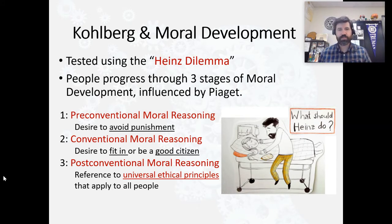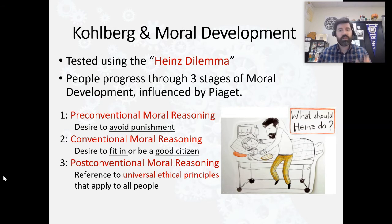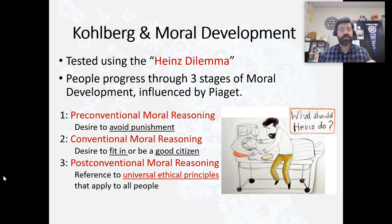Kohlberg wanted to test this out, and he did so by writing what's famously known as the Heinz Dilemma. The gist is: there's a man whose wife is really sick, and a doctor has developed a drug that can cure her. But the doctor is charging a lot of money for the drug, and Heinz doesn't have the money. He's tried every legal possible thing to raise the money and he's still short. So Heinz is considering breaking into the doctor's office and stealing the drug to save his wife's life.